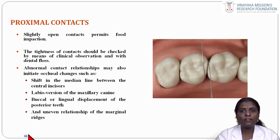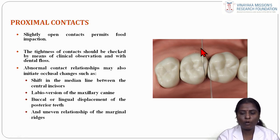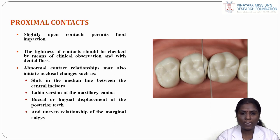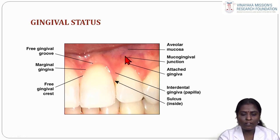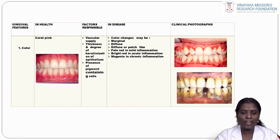Proximal contacts are slightly open contacts which permit food impaction. The tightness of contacts should be checked by clinical observation and with dental floss. Abnormal contact relationships may initiate occlusal changes such as shifts in the median line, labioversion of the maxillary canine, or buccal/lingual displacement of posterior teeth. The normal gingiva consists of the marginal gingiva, attached gingiva, mucogingival junction, alveolar mucosa, and interdental gingiva or papilla, with the narrow sulcus inside.